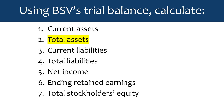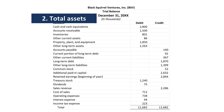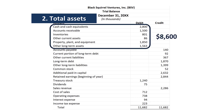We can also use it to calculate total assets. Looking at the trial balance, we're going to circle all the accounts that are total assets and add all those accounts up. That would be cash, accounts receivable, inventories, other current assets, property, plant, and equipment, and other long-term assets.